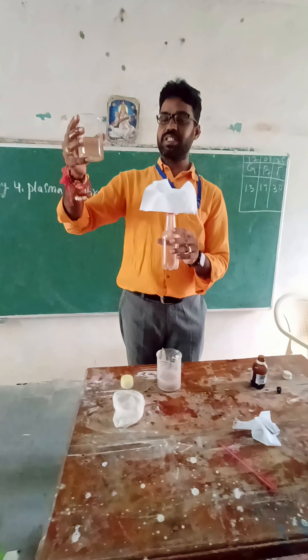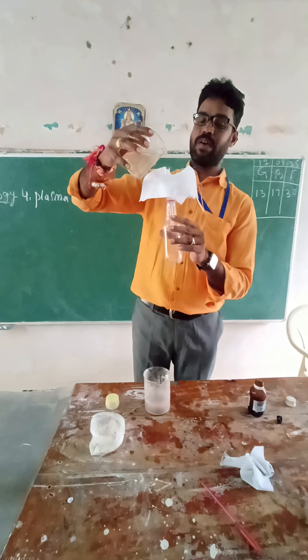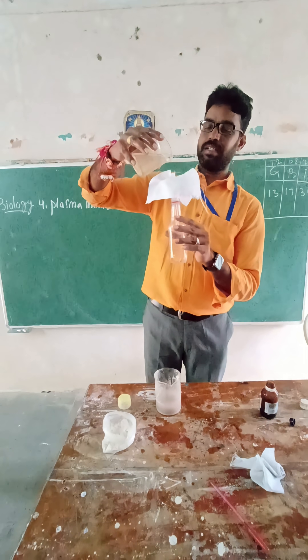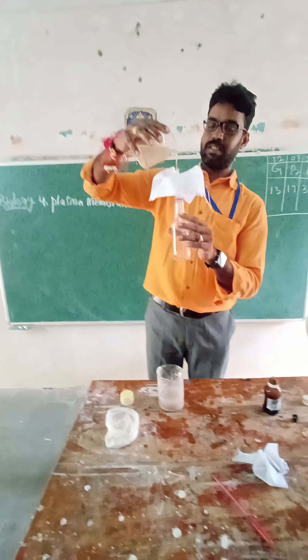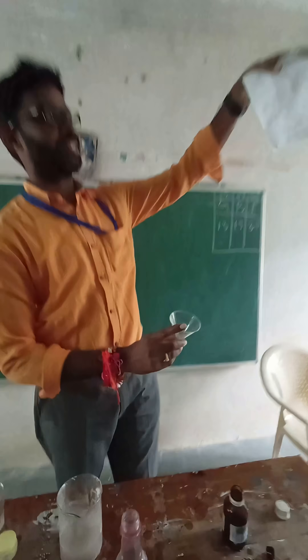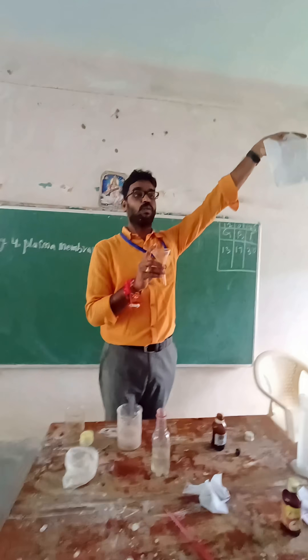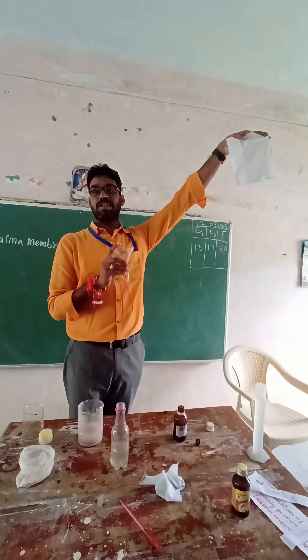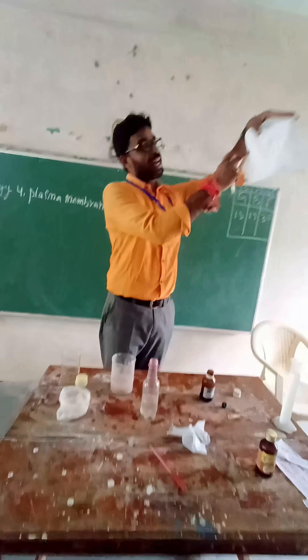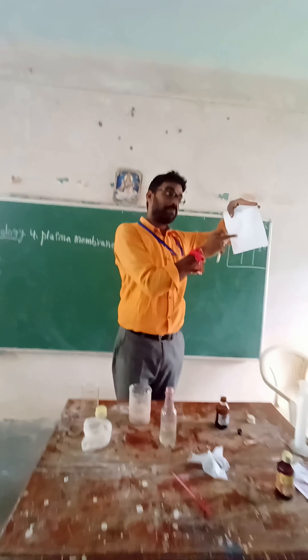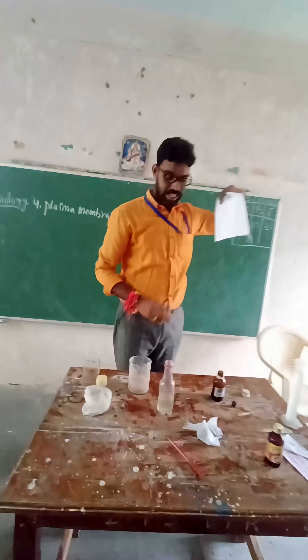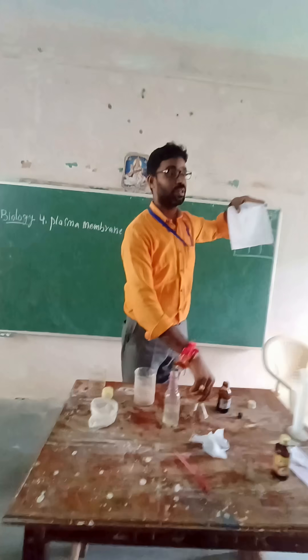Now we pour the sugar solution into the funnel. We observe that there are no sugar particles remaining on the cotton cloth — sugar is dissolved in the water, so it passes through. The plasma membrane allows only certain solutes to pass through.